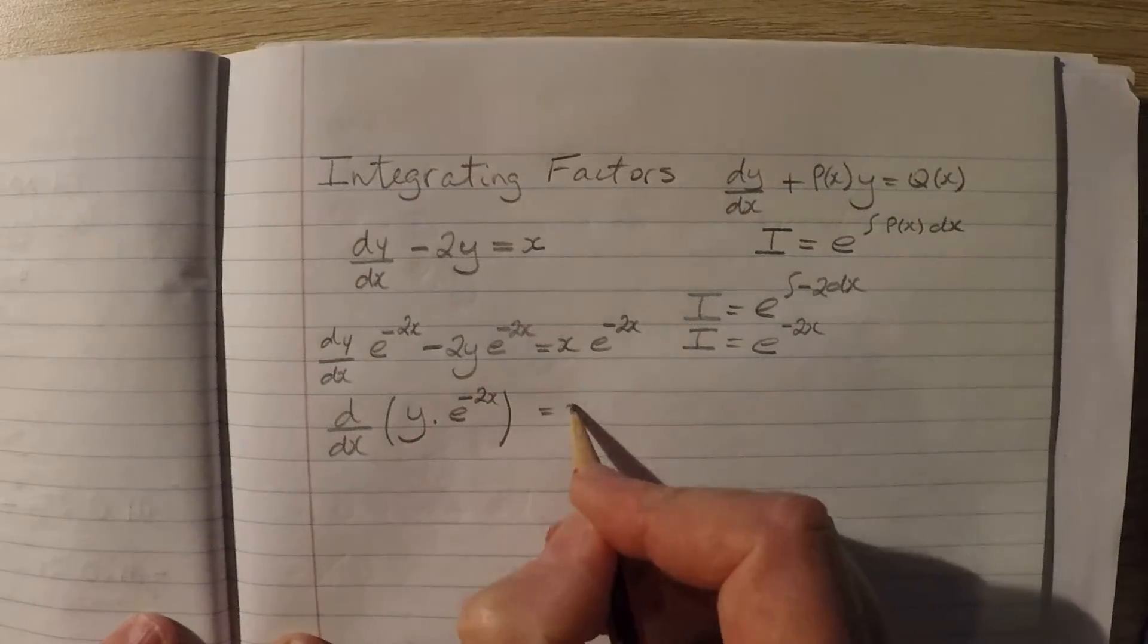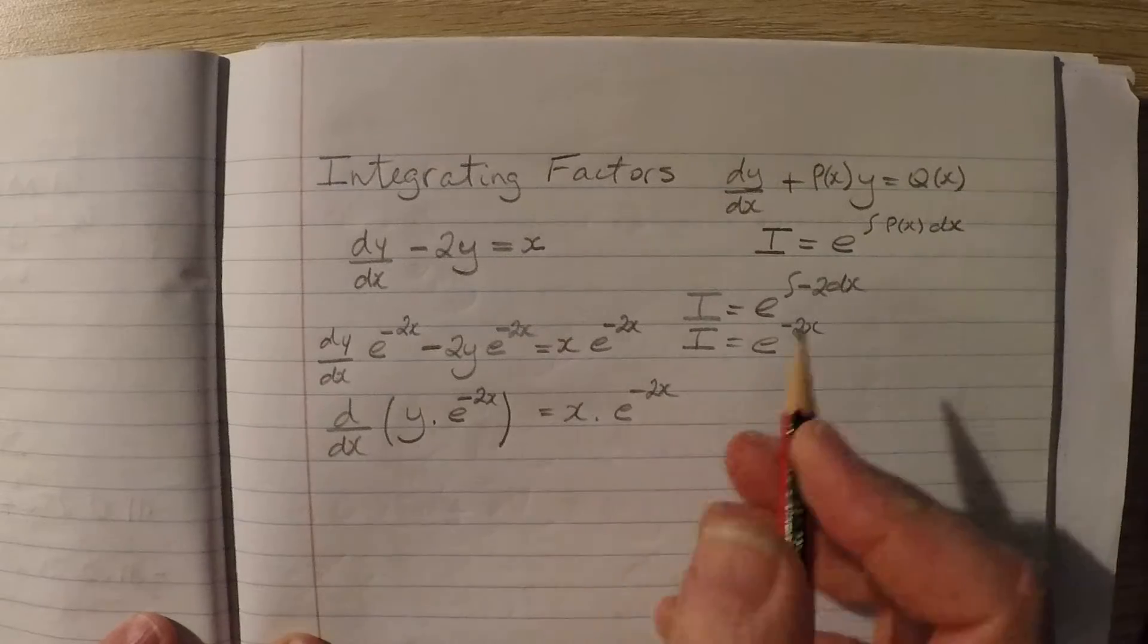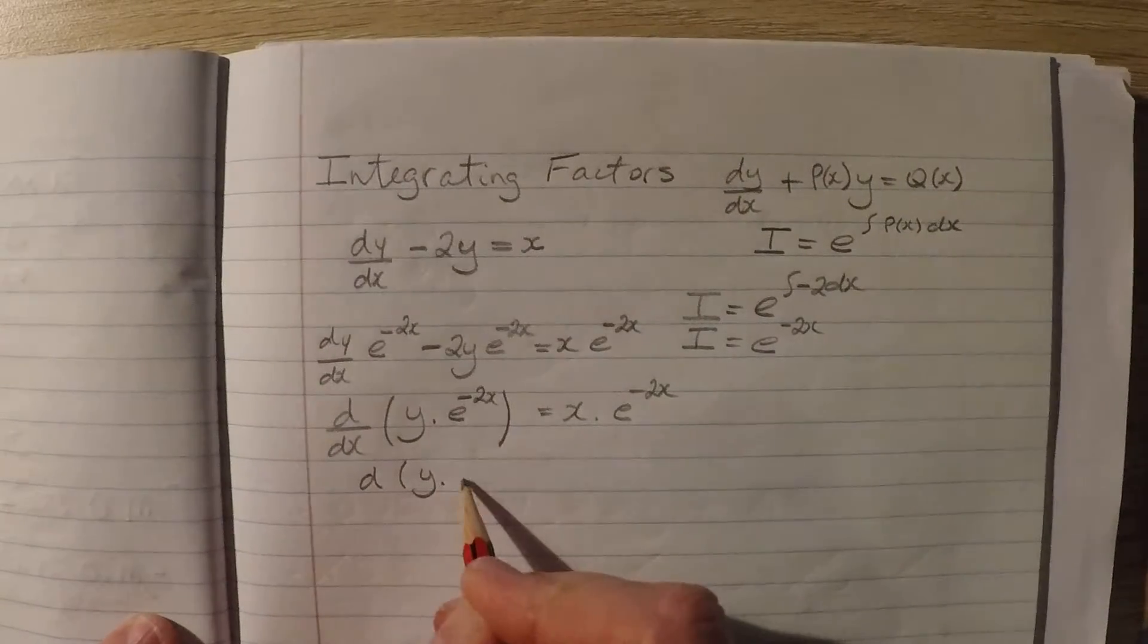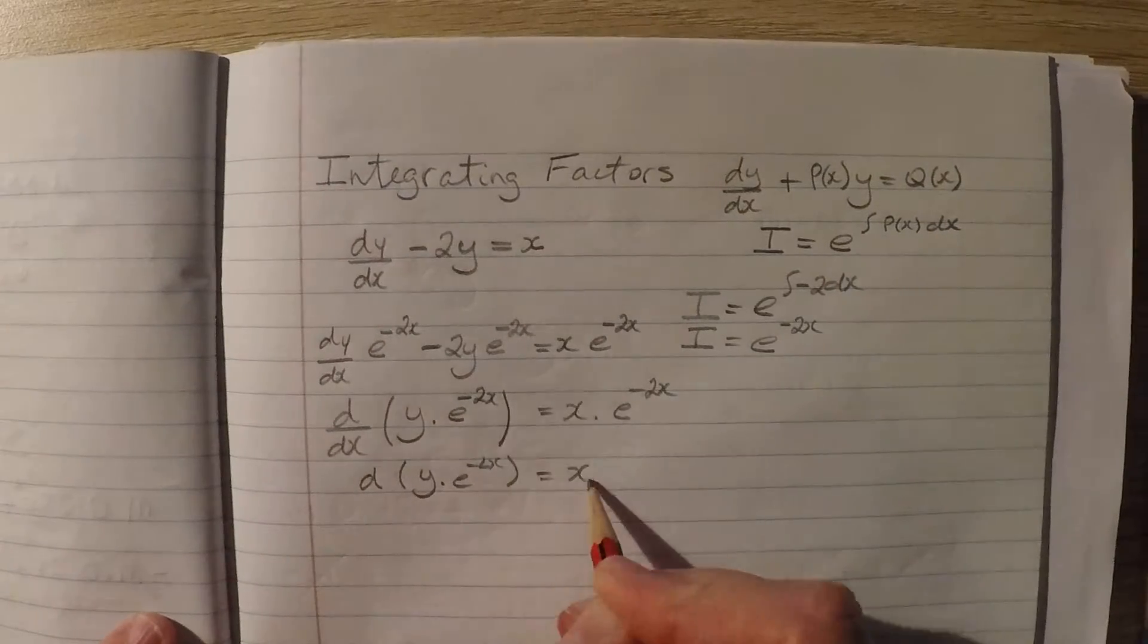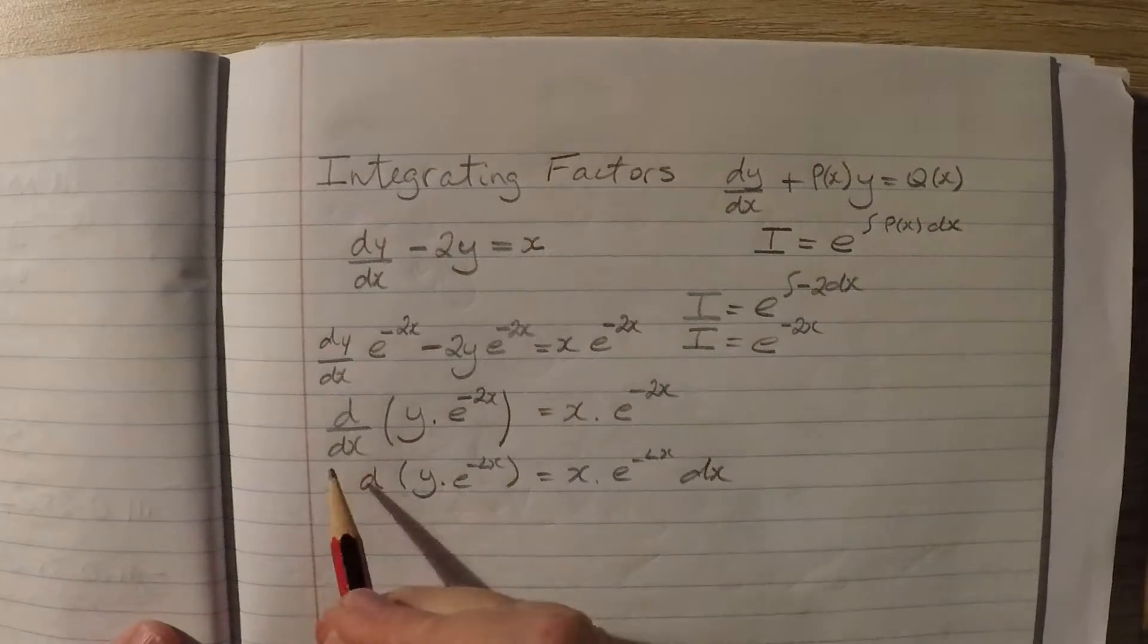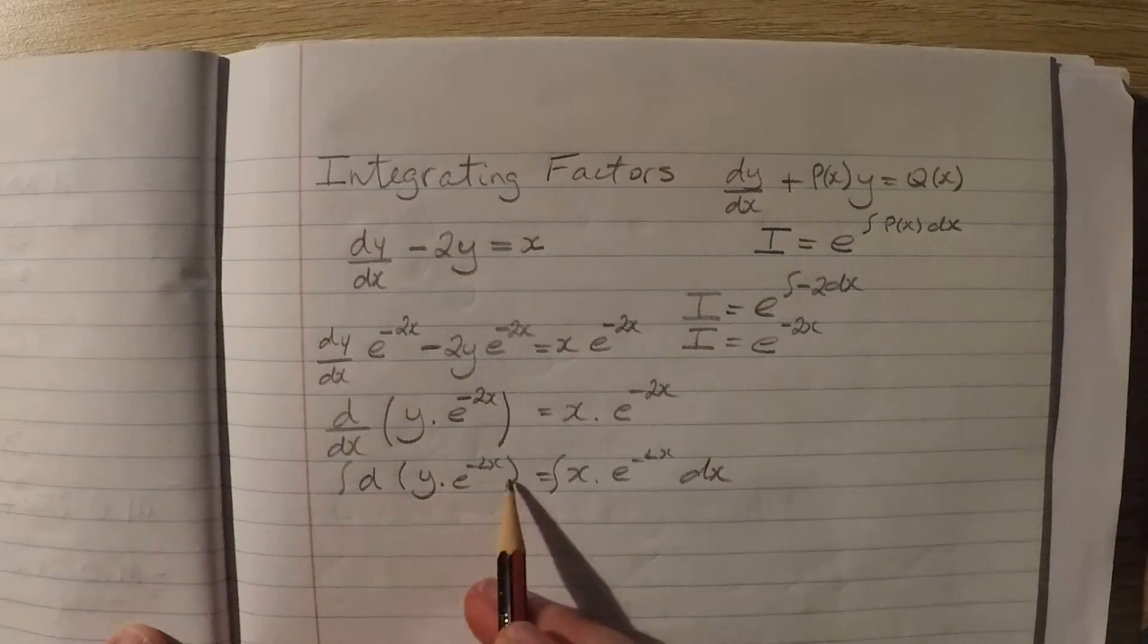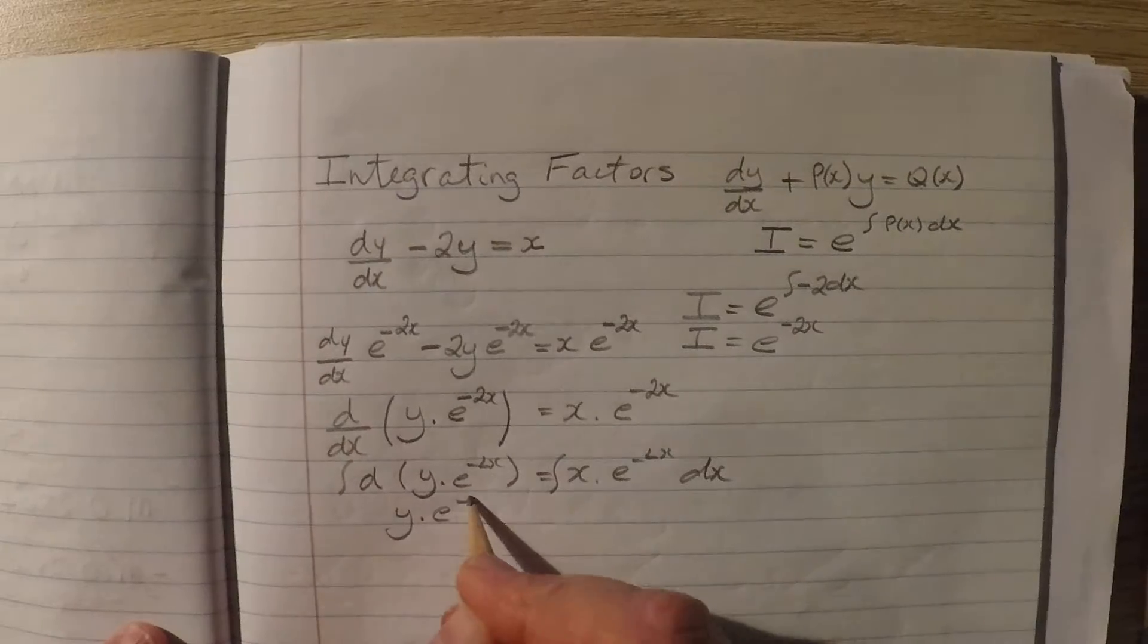And that still equals x by e to the negative 2x. Now separate the variables. So performing the integral of both sides. The integral of d these things is y times e to the negative 2x.